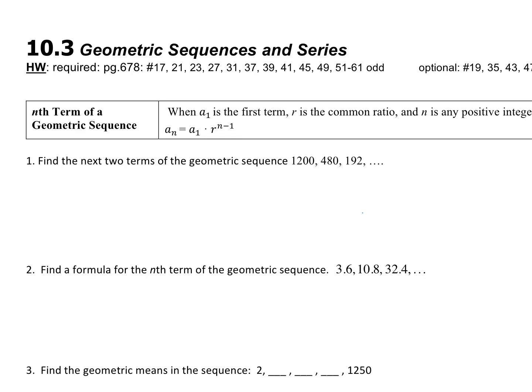In 10.3, we're focusing on geometric sequences. The first thing you should look at is the formula for the nth term of a geometric sequence. It's pretty similar to the one we learned in 10.2. In 10.2, the formula for the nth term of an arithmetic sequence starts with a1. This formula also starts with a1, and then you add the common difference n minus 1 times. The difference is you have a common ratio, and you don't add it — you multiply it.